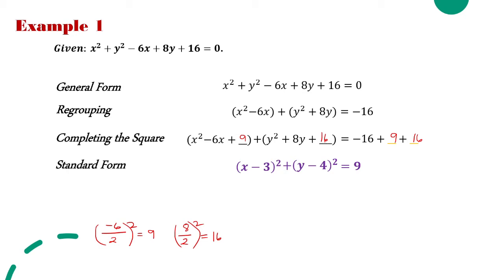This is now the standard form of the equation given in example number 1. If asked to identify the center, h = 3 and k = 4, so the center is (3, 4). Getting the radius would be the square root of 9, which is 3.